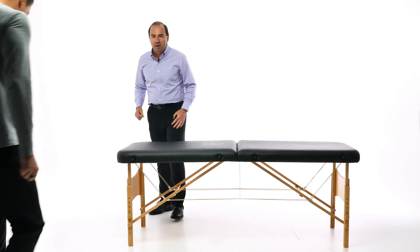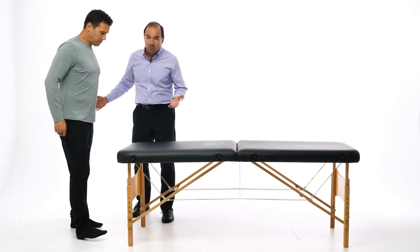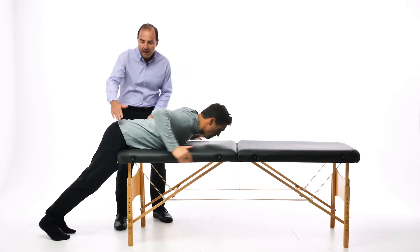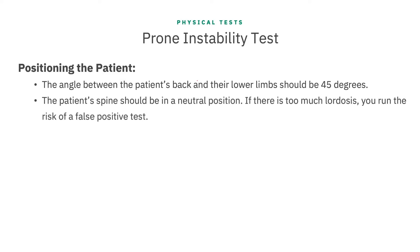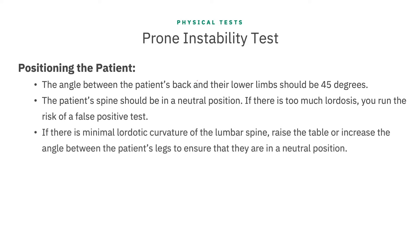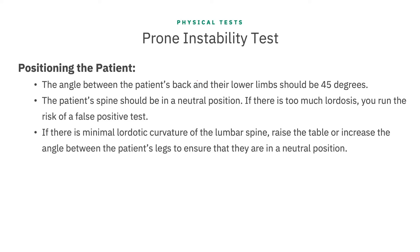We've got a patient here, and the first thing is positioning. We're going to position the patient over the table, and we aim for ASIS right at the edge of the table. The angle between the patient's back and their lower limbs will depend on how tall the patient is and the height of your exam table. Ideally, this should be about 45 degrees. More important than the angle of the legs is that the patient's spine is in a neutral position. If there's too much lordosis, you run the risk of a false positive test. When I see excessive lordotic curve of the lumbar spine, I raise the table or increase the angle between the legs to ensure they are in that neutral lumbar position.